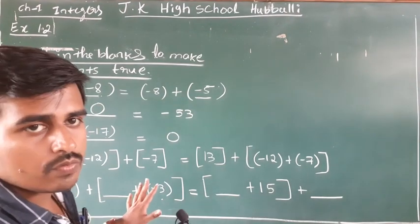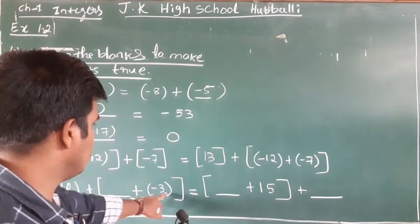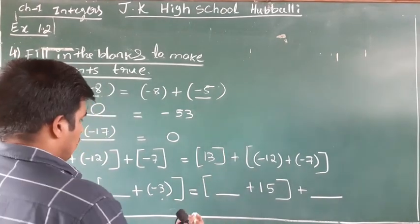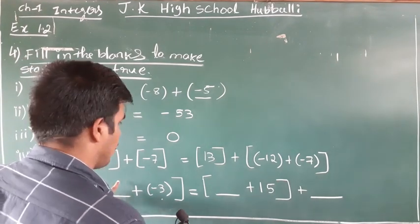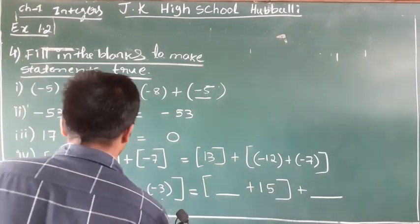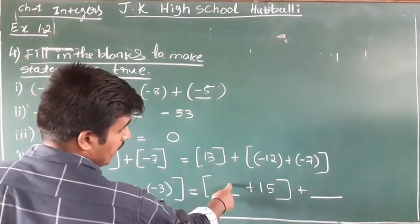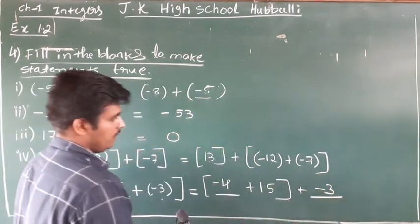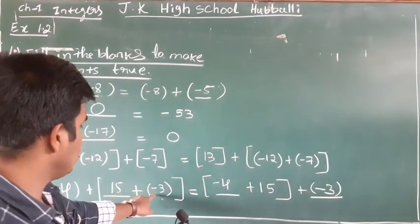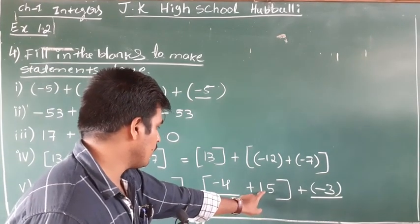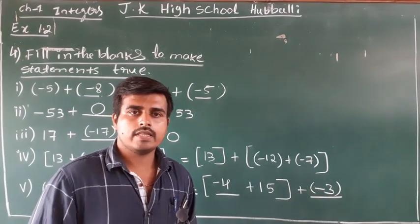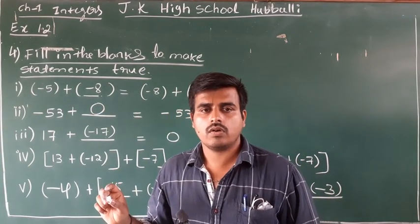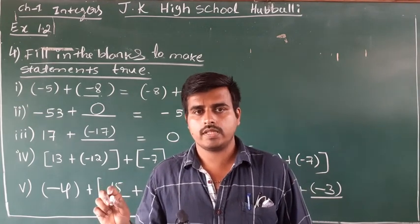The last one also reminds you of the associative property. There are three operands — 4, 3, and one more number — but they changed the position of the operands. In the blank place you can add plus 15; and since 15 plus minus 3 is already here, you should not repeat it, so you write minus 4 here. The associative property: 15 plus minus 3 is added then minus 4 is added to it, but here minus 4 is added first then minus 3. By recalling one or another property, you can fill all these blanks. Exercise 1.2 is over; in the next class I will see you again with exercise 1.3. Thank you all, have a nice day.